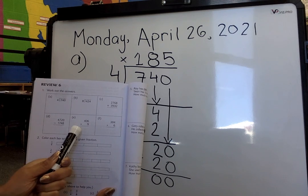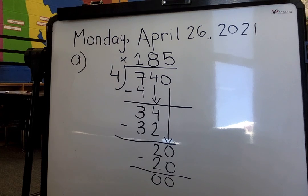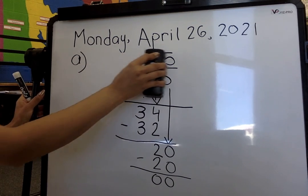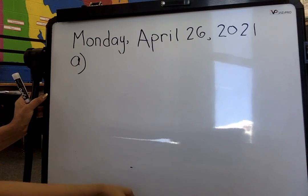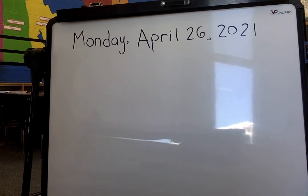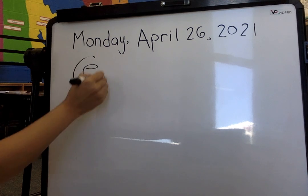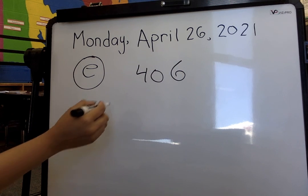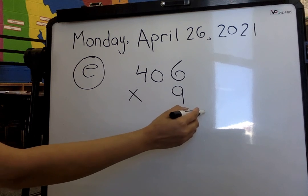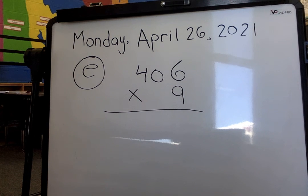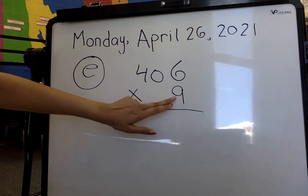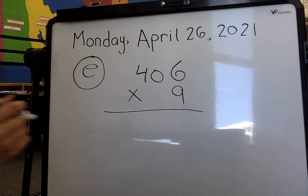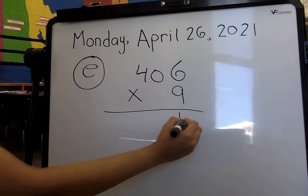So let's go ahead and let's look at question E so that we get a bit of a refresher on how do we multiply. So I am going to do question E. So let's go ahead and the question is 406 multiplied by 9.